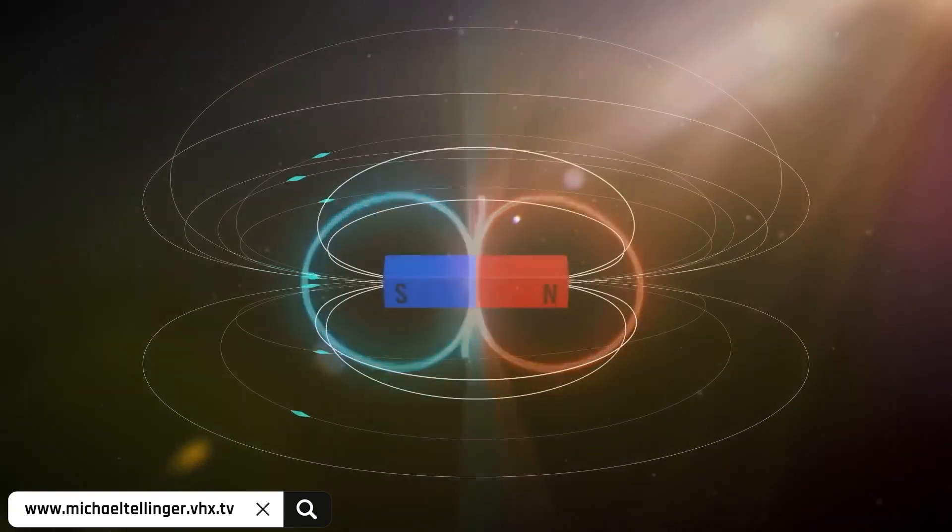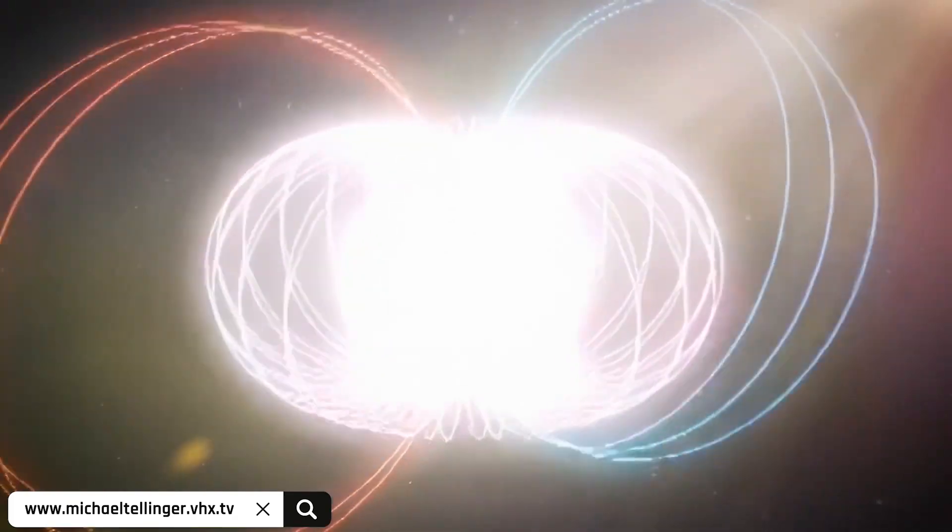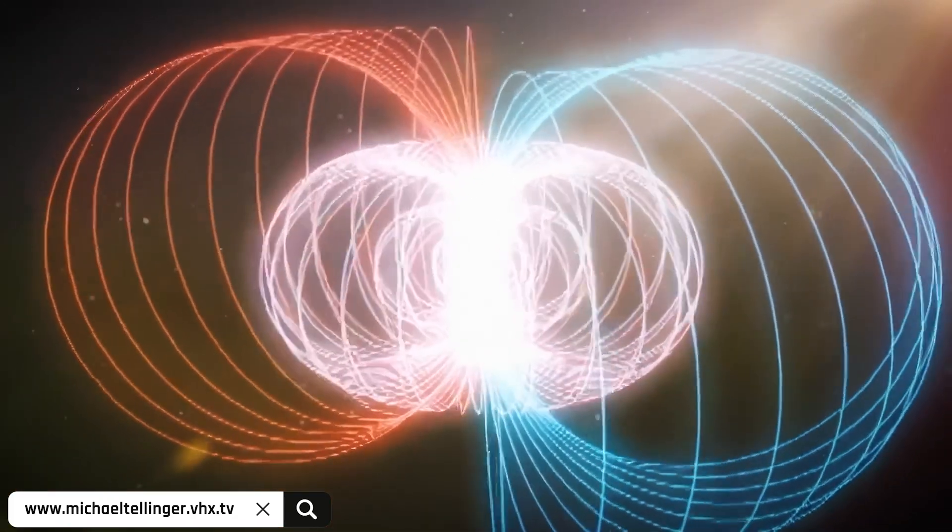Sound manifests toroidal fields, those moving toroidal fields create magnetic fields, which are toroidal fields as well, and moving magnetic fields create electricity. That's the sequence of events.